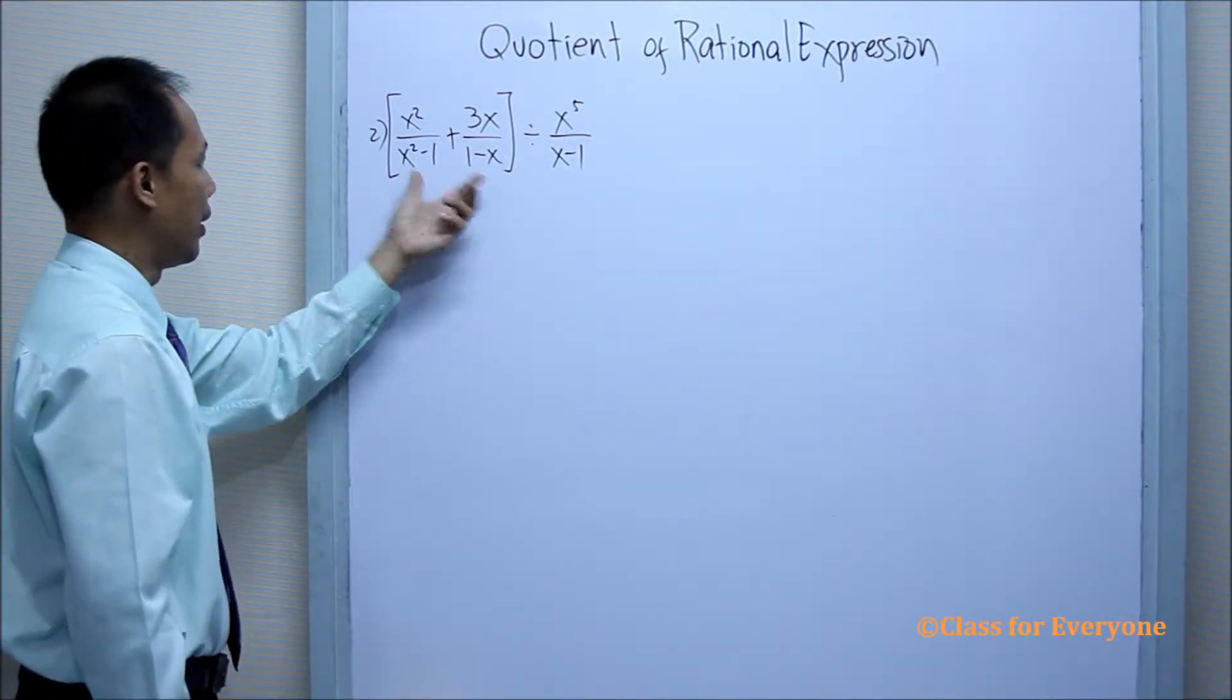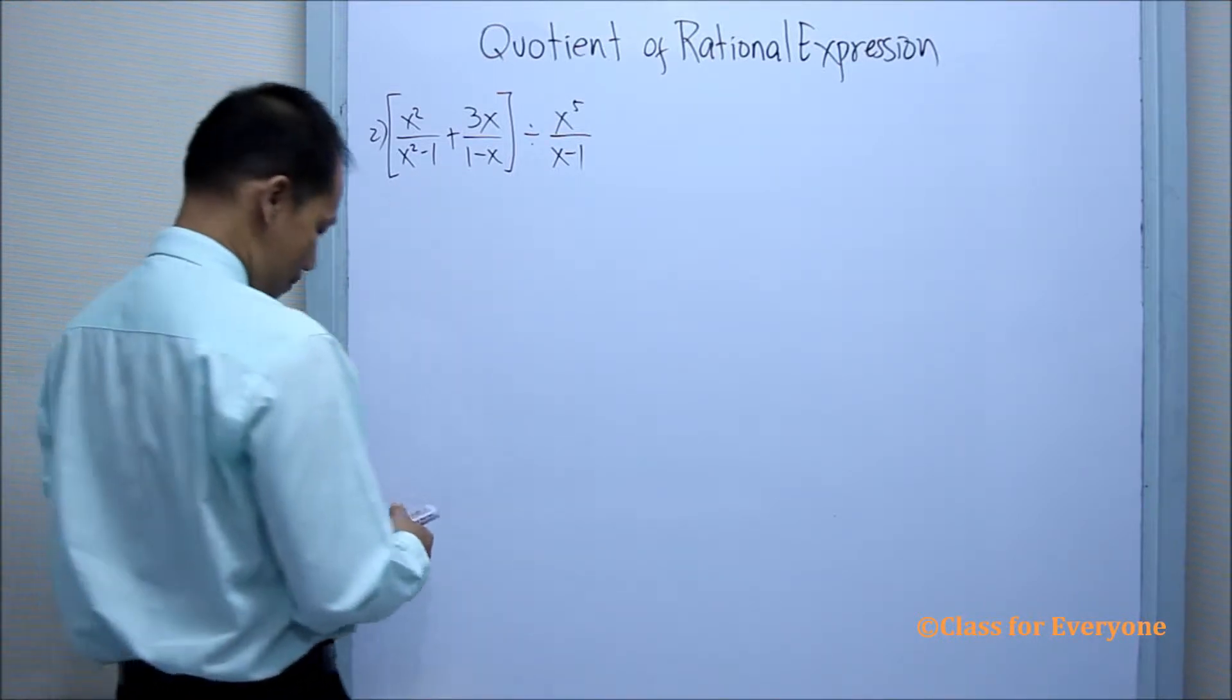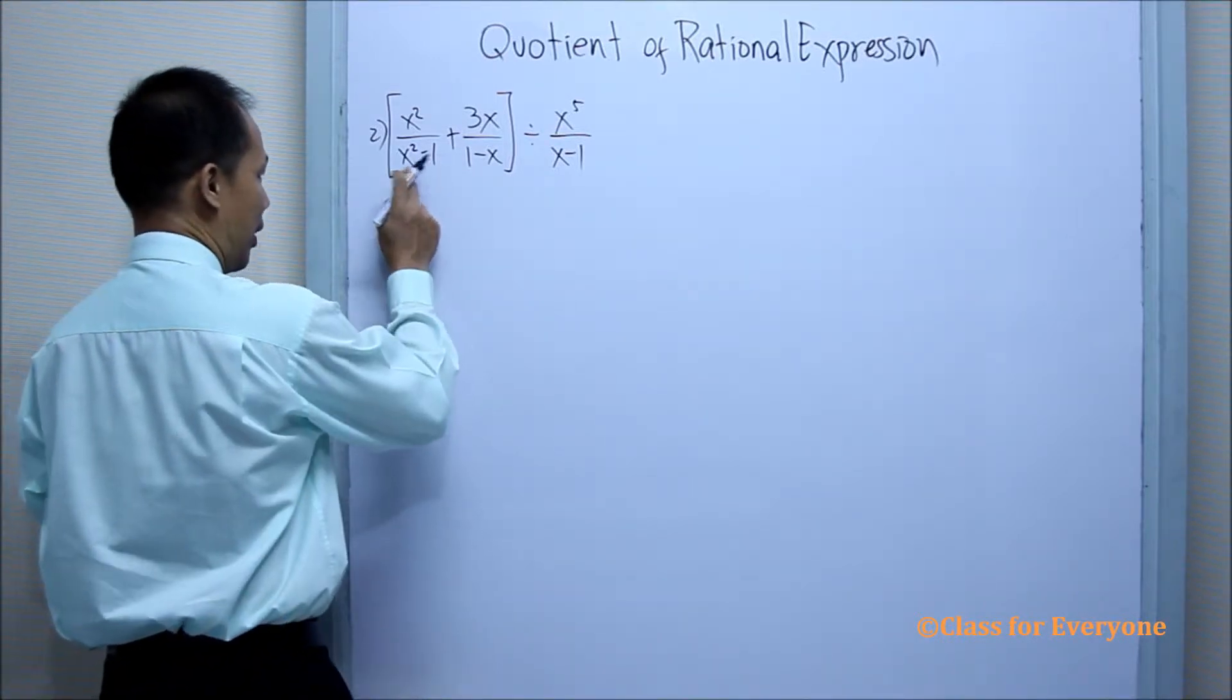So in adding rational expressions, we have to find the LCD. And then finding for the LCD, let us factor this first.